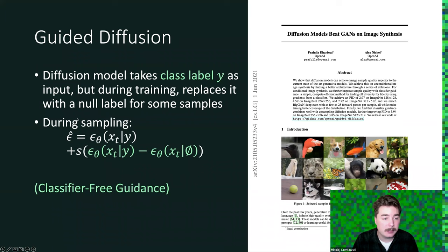During sampling, we have our basic prediction of noise based on parameters theta and our label. And then we add to that an additional term scaled by a factor s, which is basically our hyperparameter.